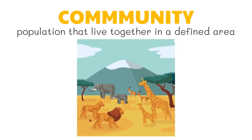A community is a group of populations that live together in a defined area. A community consists of all the different species within a certain area. The population of lions in Kenya, plus the populations of giraffes, elephants, and all the other species in that area, add up to a community.